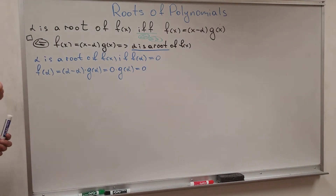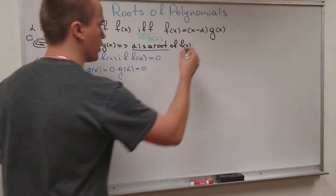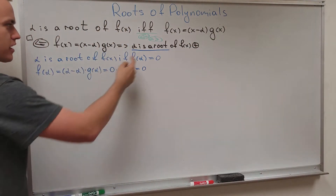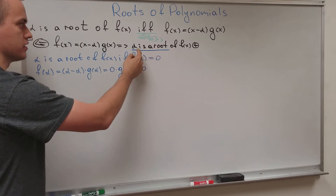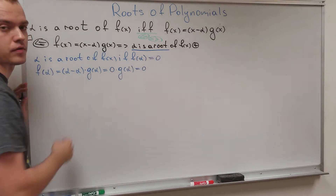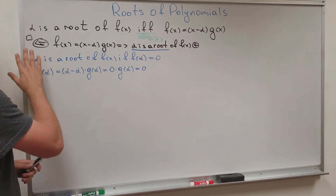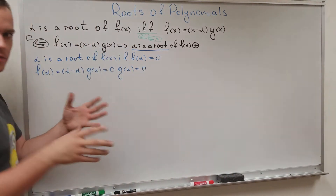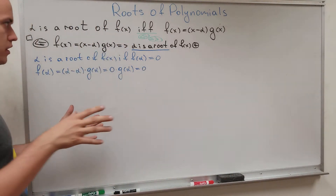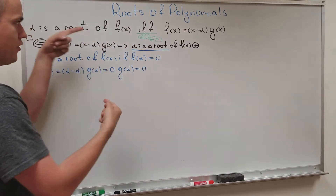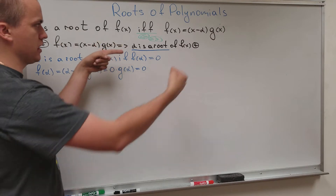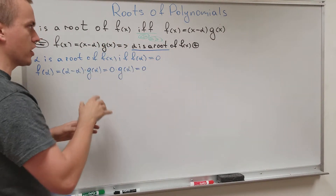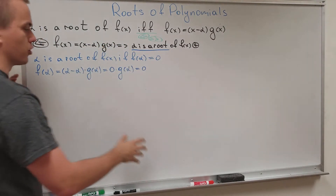So we are good — the first direction is done, and alpha is confirmed to be a root of f(x). The sufficient condition is complete. In mathematics, when you have sufficient and necessary conditions, usually one direction is really straightforward, but the other direction is a little bit more challenging.